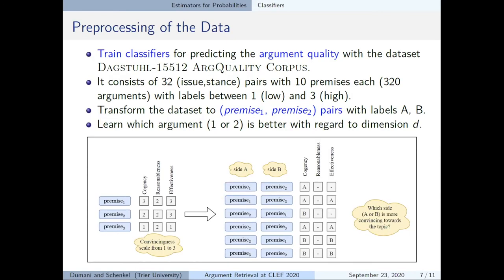To train classifiers for predicting argument quality we work with the dataset Dagstuhl-ArgQuality Corpus. It consists of 32 issue stance pairs with 10 premises each and labels between 1 and 3. And in order to work with more data we transform the dataset to premise 1 premise 2 pairs with labels A and B instead of final ratings. And then learn which argument, the first or second, is better with regard to a specific dimension.